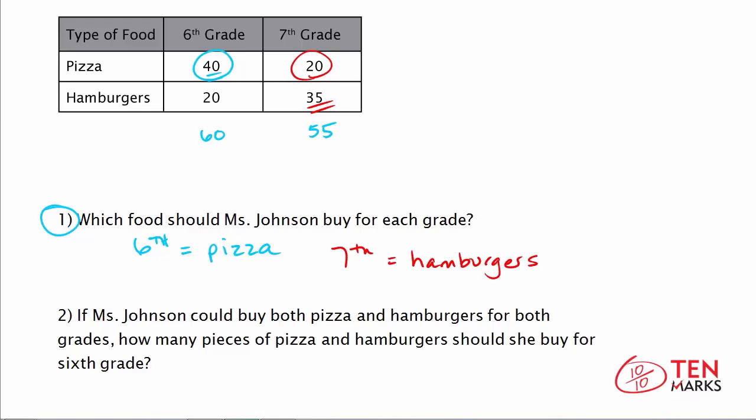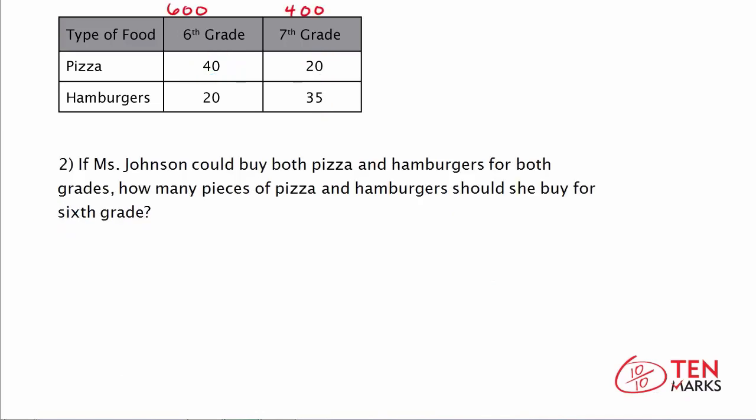Now let's take a look at this second question here. So what I've done here is rewritten the total class numbers. There are 600 6th graders and 400 7th graders, and we'll need to keep that in mind as we solve the second problem. The second problem says, if Ms. Johnson could buy both pizza and hamburgers for both grades, how many pieces of pizza and hamburgers should she buy for 6th grade? In this case, we're not going to give a preference. We're going to say we'll get some amount of pizza and some number of hamburgers, and that will cover the population of the 6th graders.